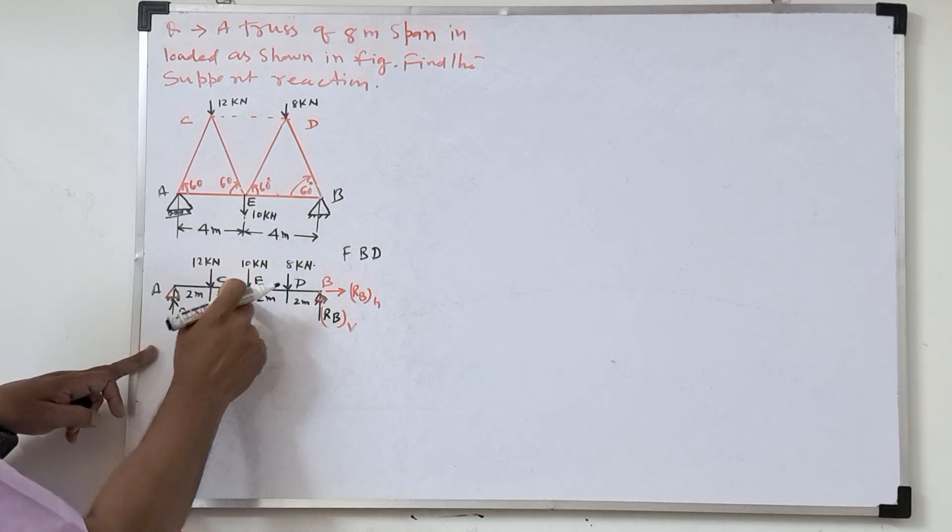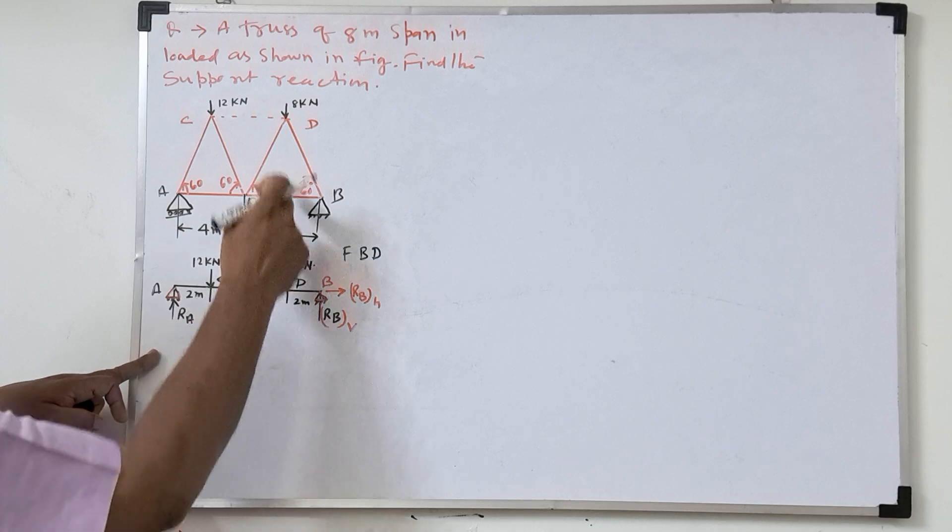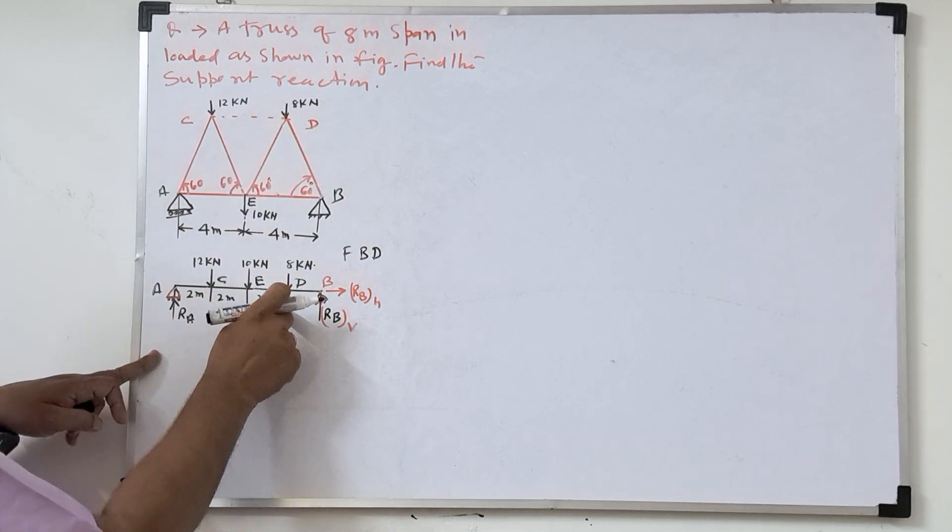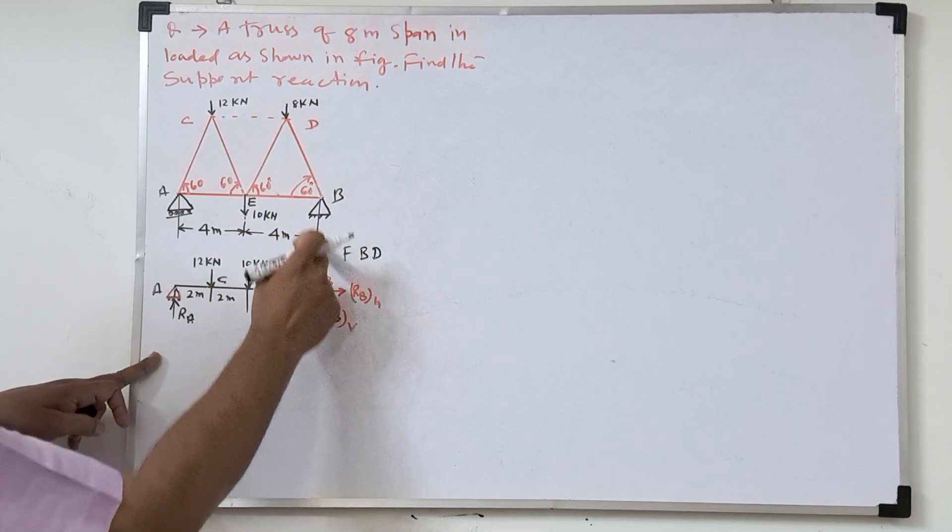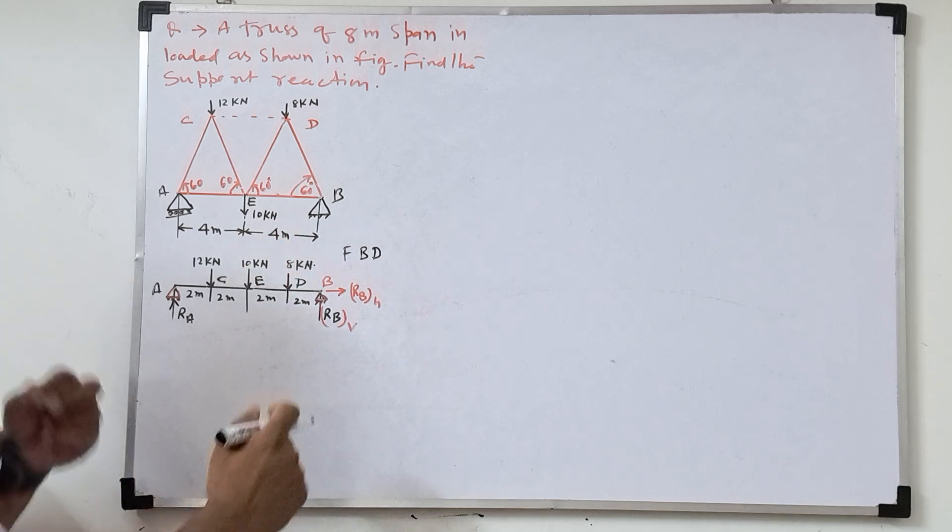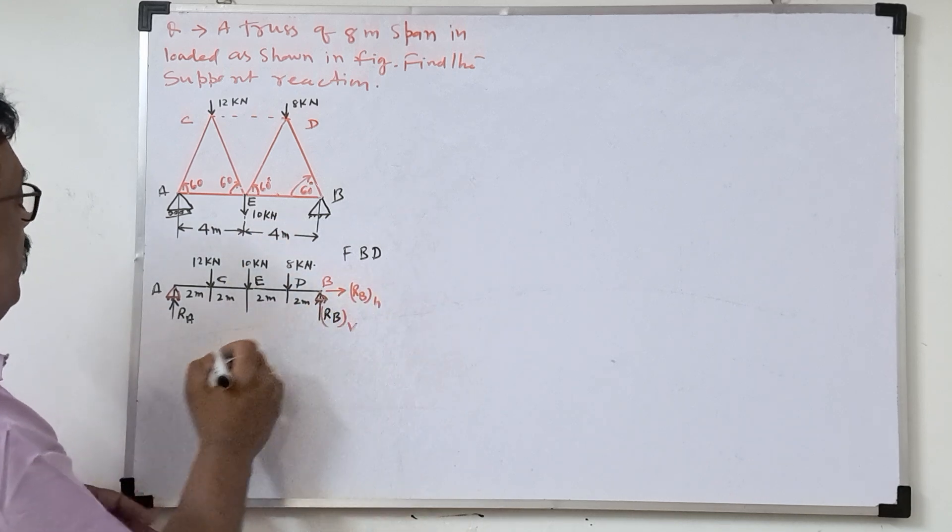And middle point, the given 10 kilonewtons, that is 4 meter distance. Then again middle to D point and then here hinge support. Hinge support, two reactions will act, horizontal and vertical.